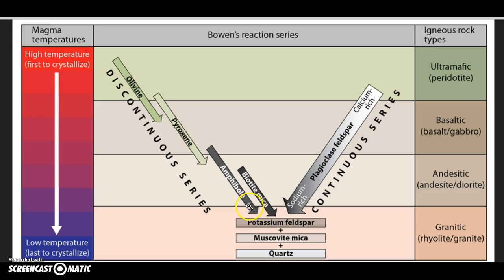Granites, on the other hand, might have a little bit of amphibole, biotite mica, and plagioclase feldspar. They're going to have a lot more potassium feldspar, muscovite mica, and quartz - that's what we'd be seeing down at the bottom.